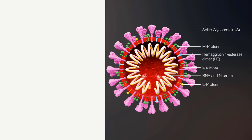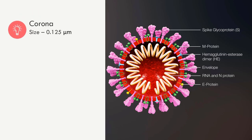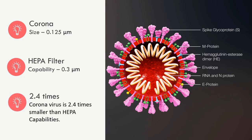Regarding coronavirus facts with extraoral dental suction: studies show that novel coronavirus SARS-CoV-2 has a size of 0.125 micrometers, whereas the HEPA filter has filtering capabilities of up to 0.3 micrometers. Some claim that extraoral dental suction is of no use for SARS-CoV-2 because it is 2.4 times smaller than the minimum capabilities of a HEPA filter.